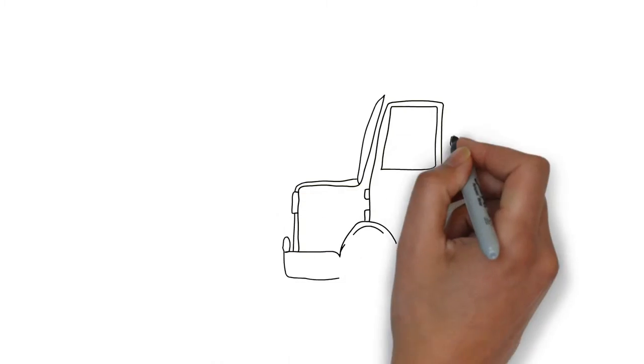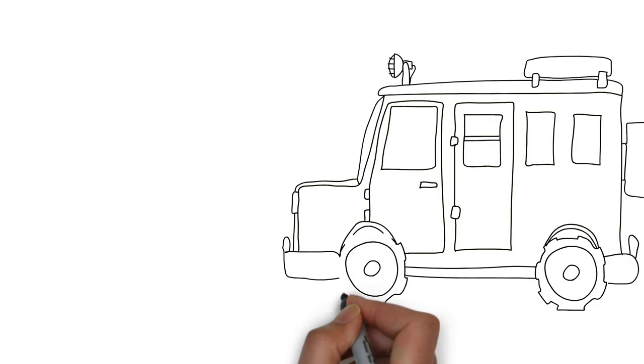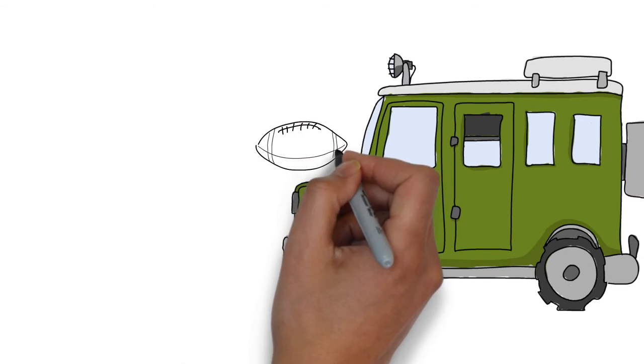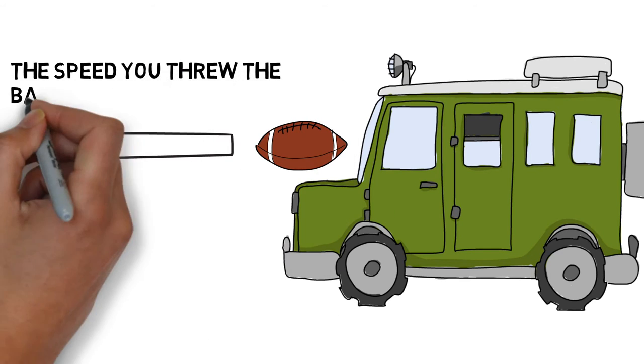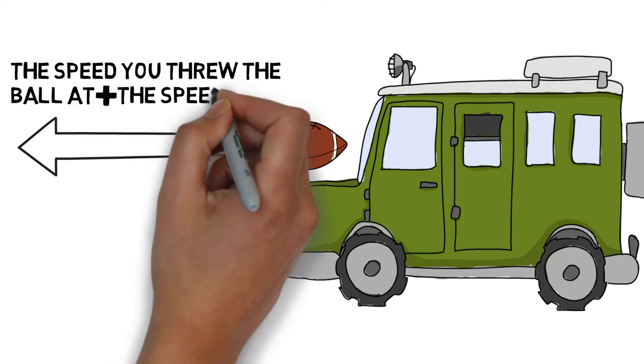Now, imagine someone in a car throws a ball out of the window in the direction the car is moving. The ball would go the speed the person threw it at, plus the speed the car was moving.